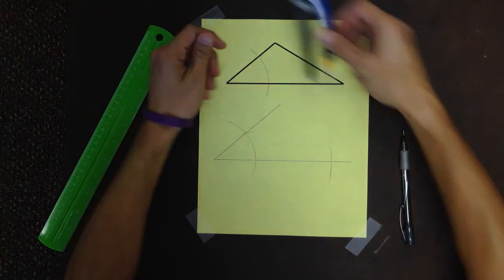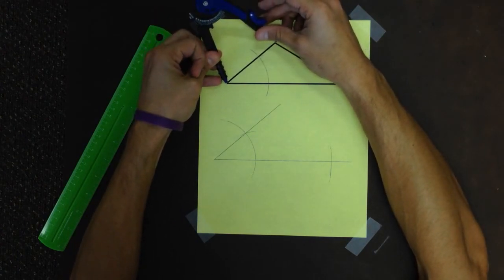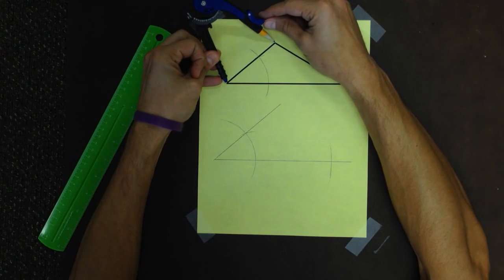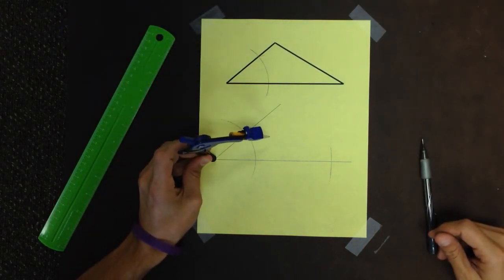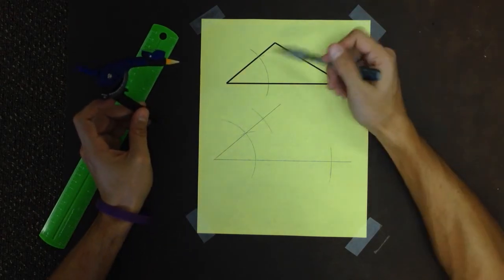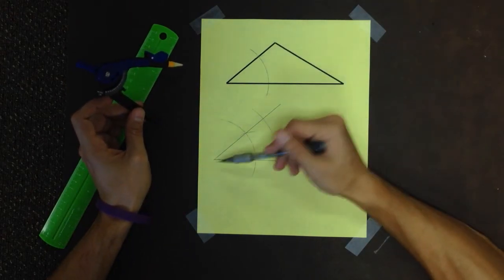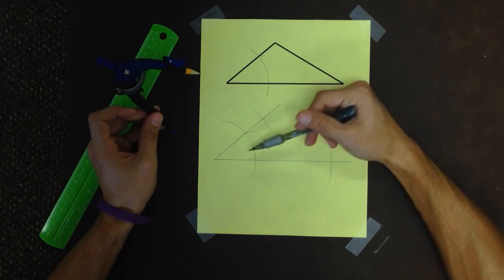I take my compass. I measure the distance of that side. It's about that long. I put the non-pencil in on the vertex. I draw an arc that crosses my line. The distance from here to here is the same as from here to where my arc intersects my line. Side angle side.